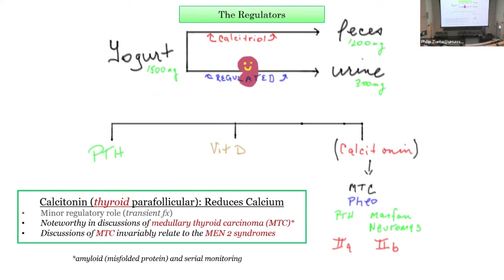On a standard diet taking in 1,500 milligrams of calcium per day, the majority is lost in feces, but calcitriol can increase absorption; a small regulated amount is lost in urine. We've talked about PTH and vitamin D. What about calcitonin? It reduces calcium, but in reality it has a minor regulatory role — don't count on calcitonin to do much in terms of controlling serum calcium levels. It's a very transient effect.